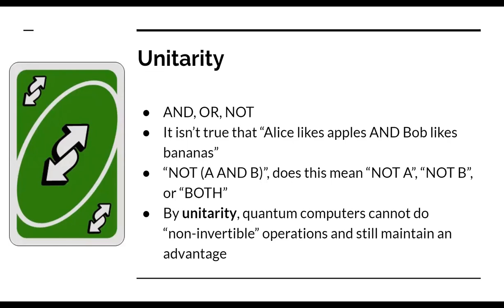This is related to a principle in quantum mechanics called unitarity. If you do irreversible operations like ANDs and ORs, you're deleting information and the speedups from quantum computing don't work out. A NOT gate, however, you can do — if I say 'Alice doesn't like apples' and that's false, you know she does like apples. You can reverse that exactly. But when it comes to ANDs, ORs, NANDs, and NORs, you can't do those in the ways you're used to.